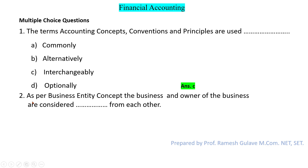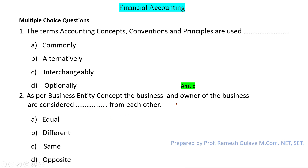The next question says: as per the business entity concept, the business and owner of the business are considered dash from each other. As per the business entity concept, the business and owner are considered different from each other. So here option B is the right answer.